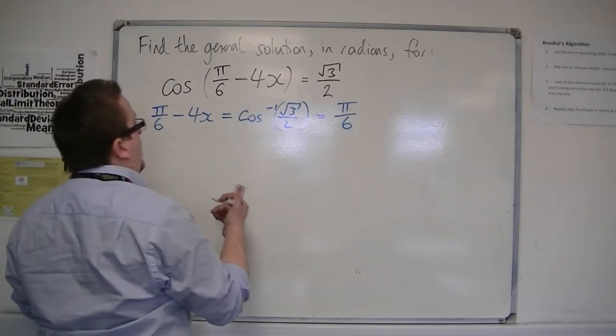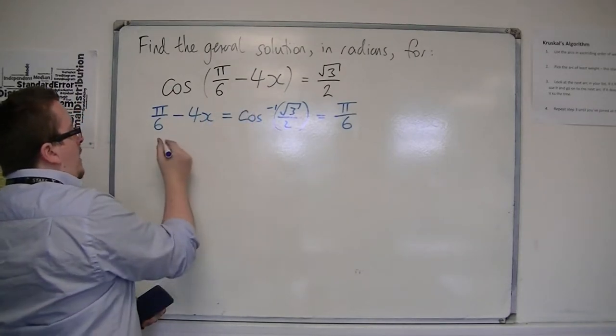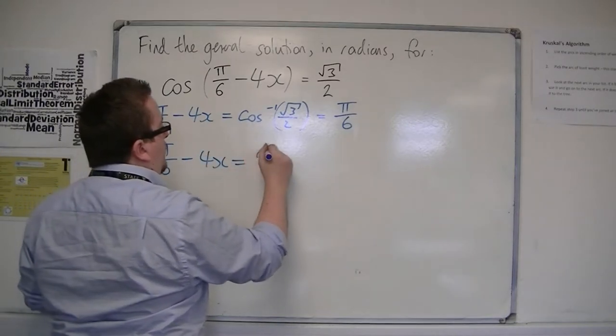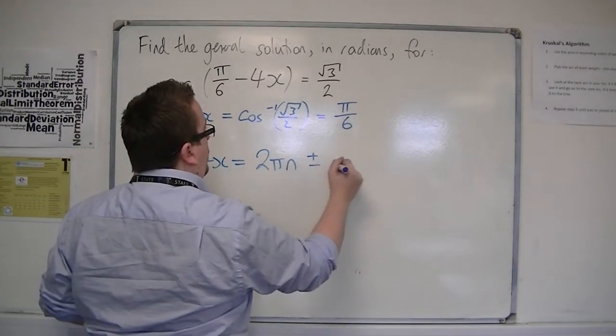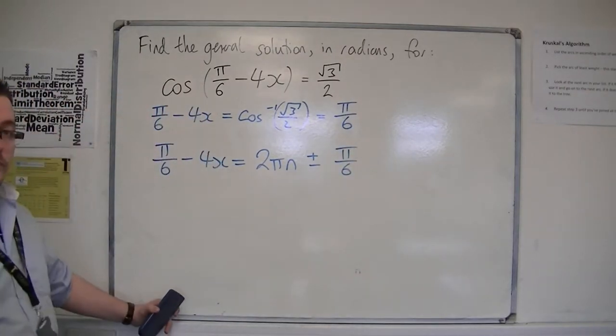So we either have, well, remember for cosine we can write them as one equation. So we've got pi over 6 minus 4x is equal to 2 pi n plus or minus the value of alpha that we're working with here.